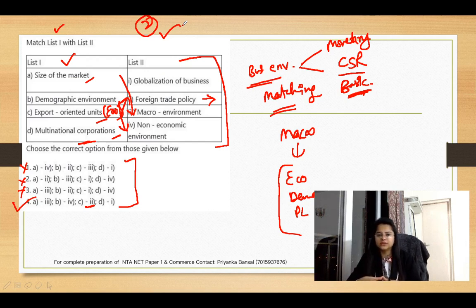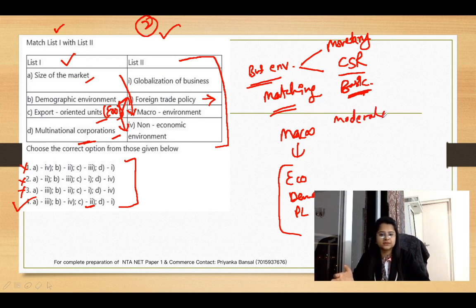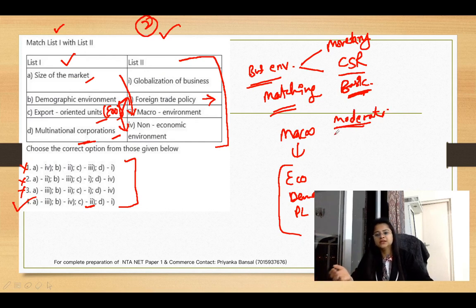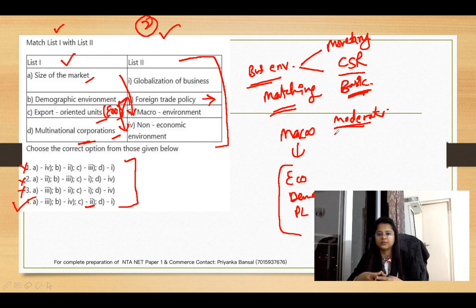If I talk about the December 2019 exam level, it was very good - we can consider it moderate to difficult. But the point is that students who had worked on the concepts and practiced the questions found it very easy. The point is you have to focus on the concept.